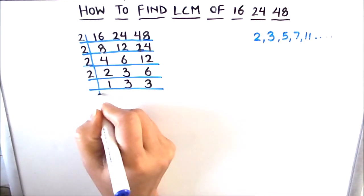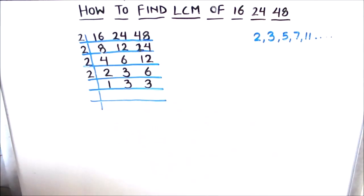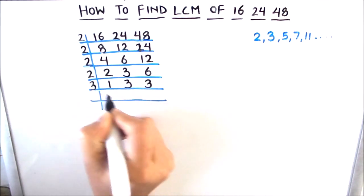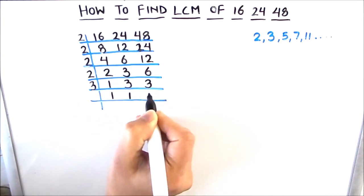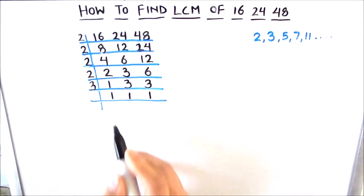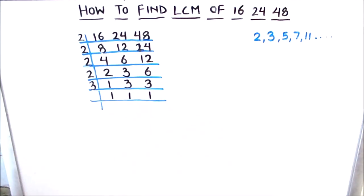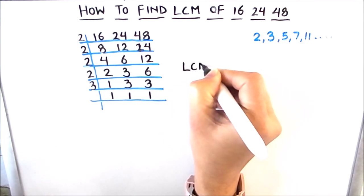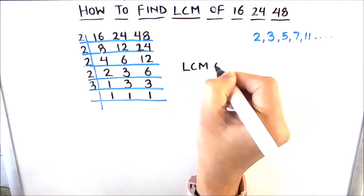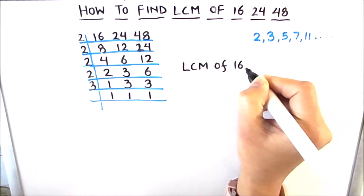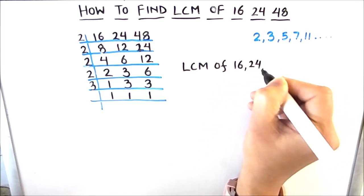Now we have 3, and 3 is a prime number so it is only divisible by 3. So 3 times 1 is 3 and 3 times 1 is 3. We now get the quotient as 1, which means all the numbers are fully divided. We are now going to take the product of the numbers on the left-hand side to find the LCM of 16, 24, and 48.